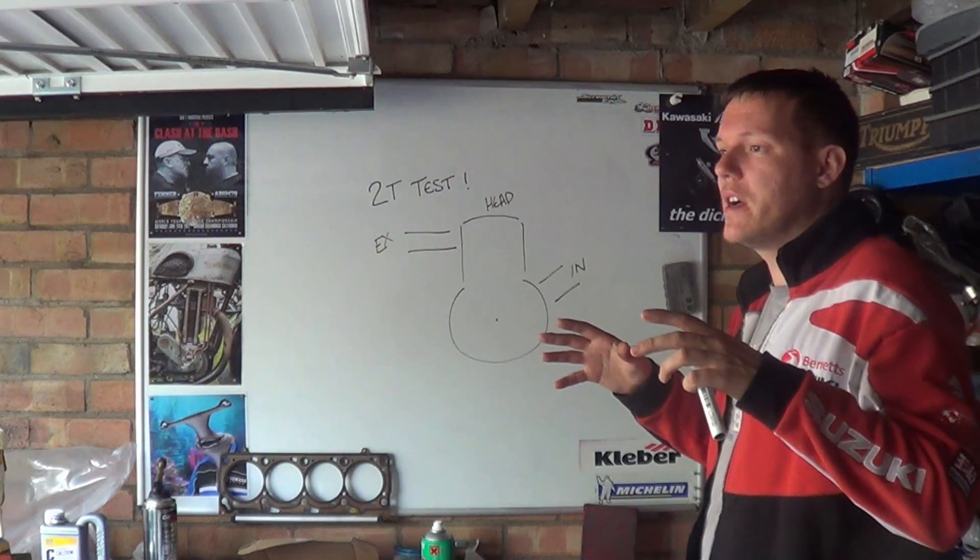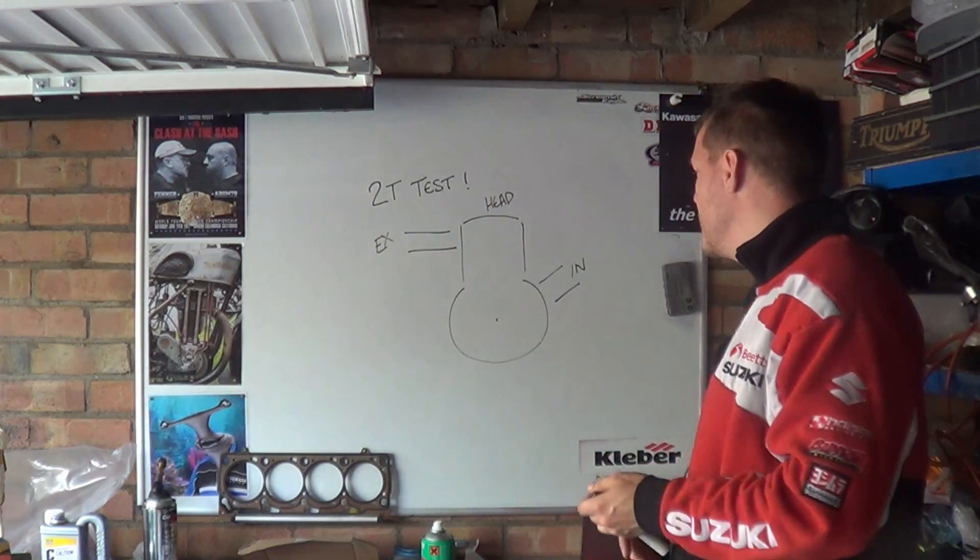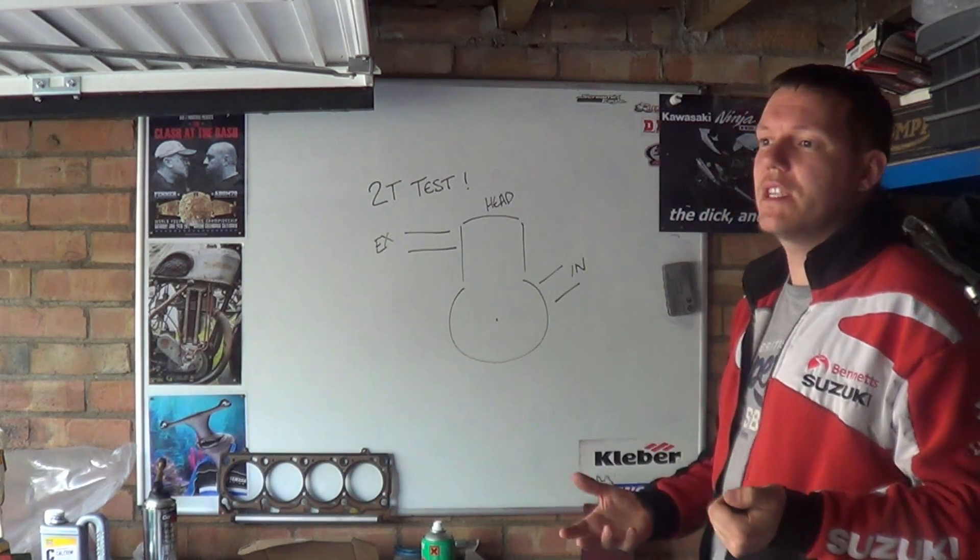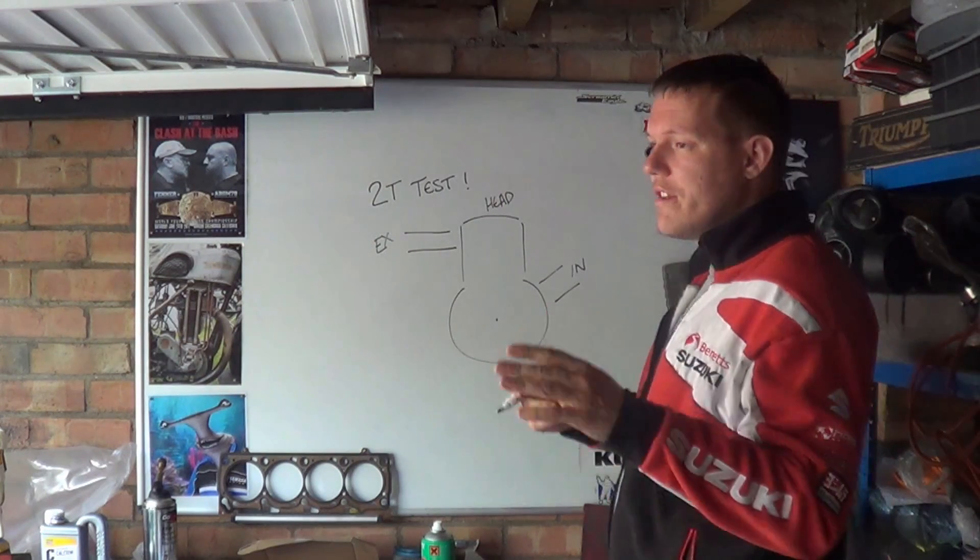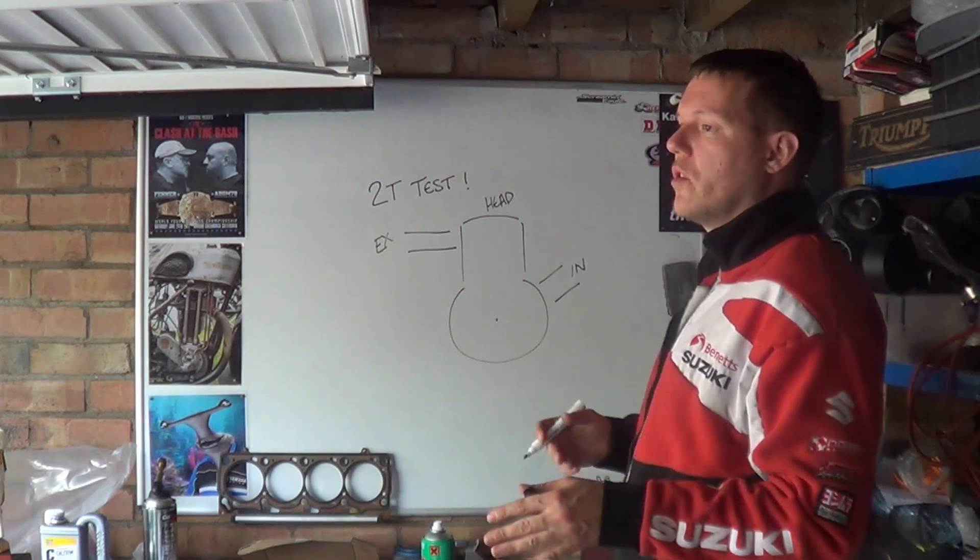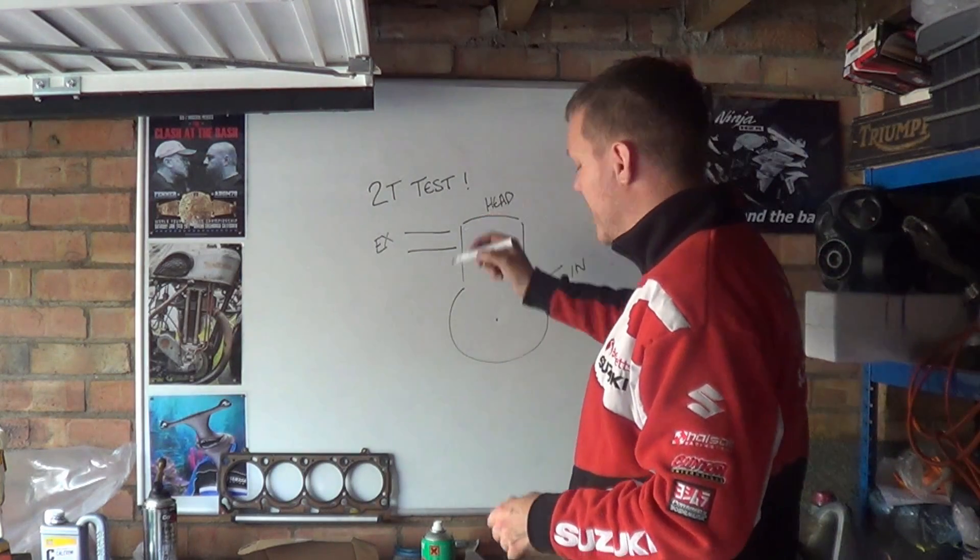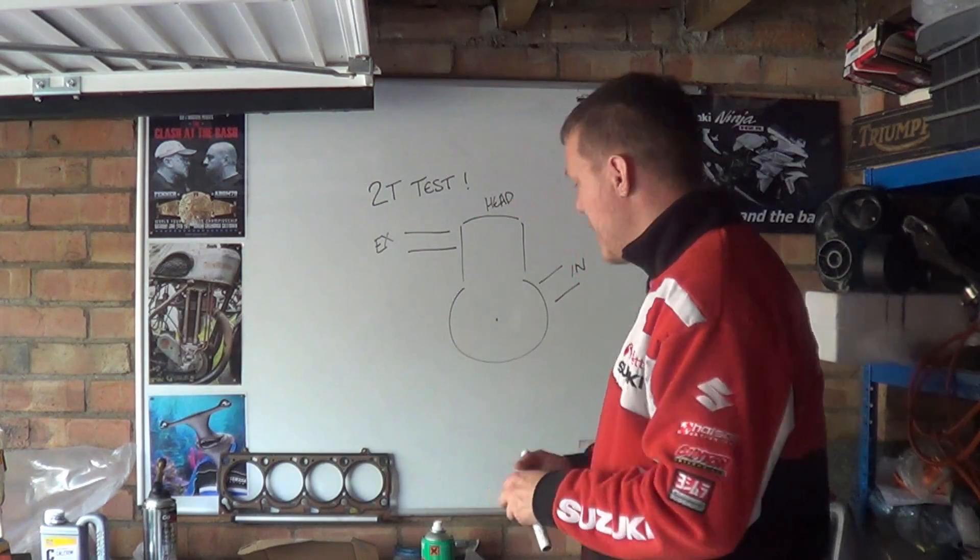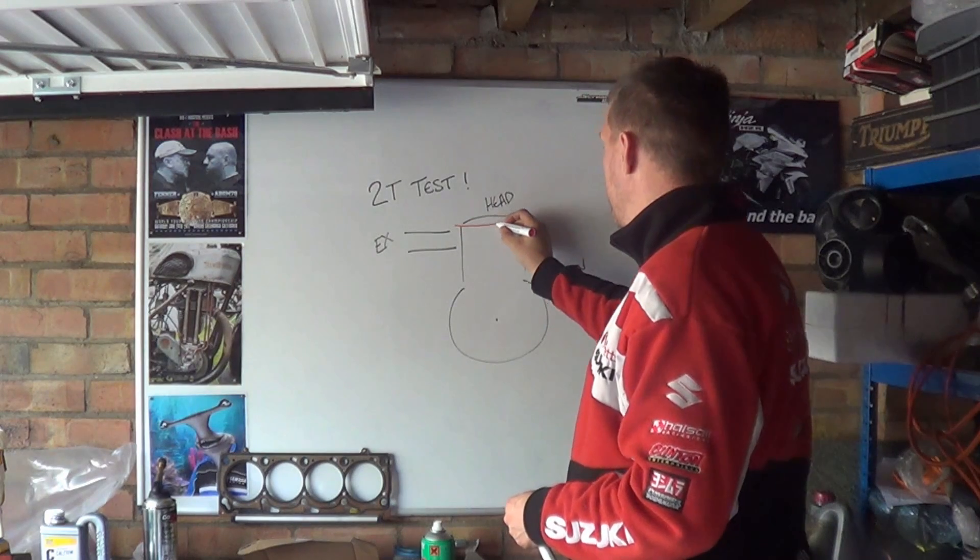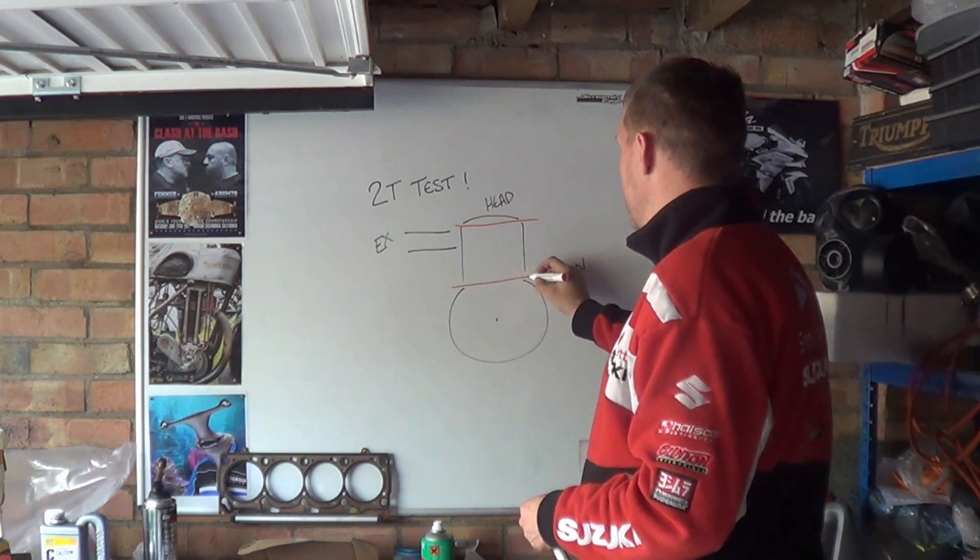And because this is a very pressure-dependent system, then it needs to be sealed. And generally, on most two-strokes motorcycles, let's not go the four-stroke route, there is a brake there, there's a brake there.